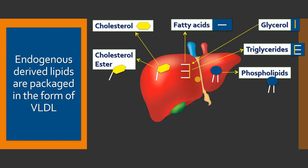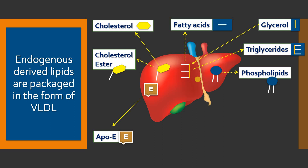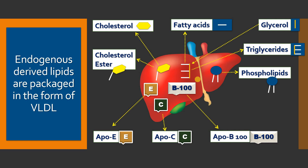Besides these lipids, the liver also has the capacity to synthesize some apoproteins, including apoprotein E, apoprotein C, and apoprotein B100. These apoproteins play a major role in the transport of lipids from the liver to extrahepatic tissues through the circulation. The lipids and apoproteins within the liver are all packaged in the form of VLDL and released into the circulation.